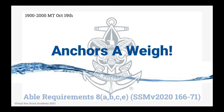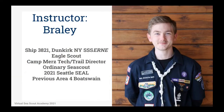Welcome to the 2021 Virtual Sea Scout Academy. This is a pre-recording of a class that took place on October 19th from 1900 to 2000 Mountain Time. Today we'll be covering ABLE requirements 8A, B, C, and E. You can review your 2020 version of the Sea Scout Manual from pages 166 to 177. My name is Braley. I'm a Sea Scout from Trip 3821 Dunkirk, New York of the SSS Urn.